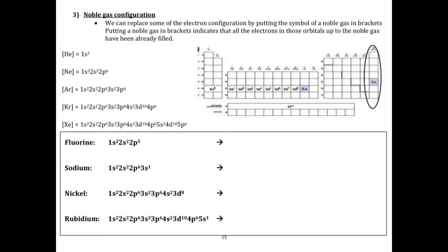Let's go ahead and continue learning about electron configurations. We did learn about orbital notations — those are the ones where we have little arrows. Then we learned about electron configuration, our standard electron configuration in class, where instead of the arrows, we put exponents.